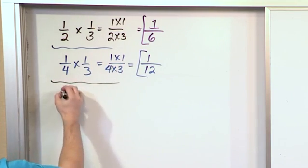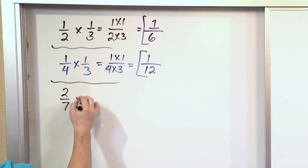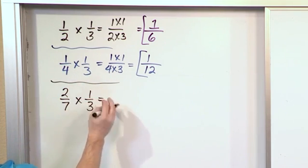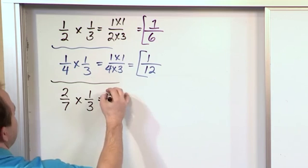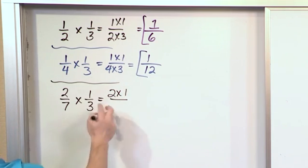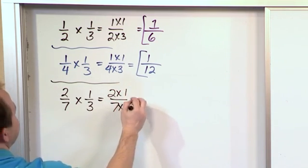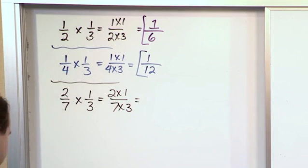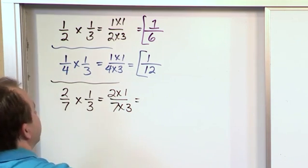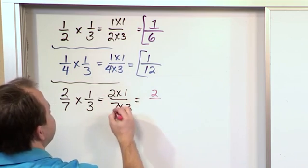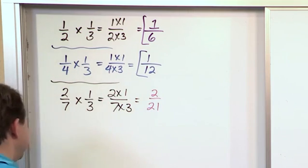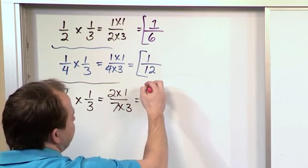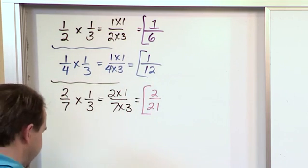Next we multiply the fraction two sevenths times one third. Again, you don't care if the denominators are the same. You multiply the numerators. You also multiply the denominators. And two times one is two. Seven times three is twenty-one. And you try to simplify that, but you cannot divide top and bottom by anything to make that any simpler. So that's the final answer.